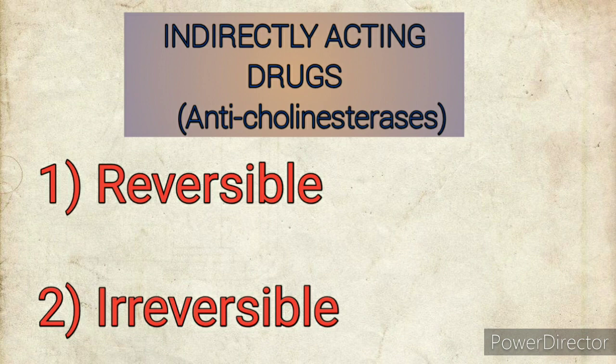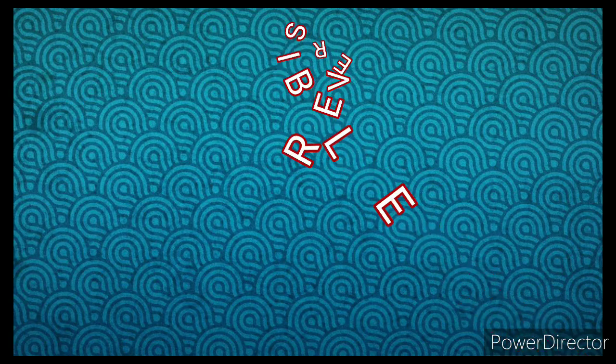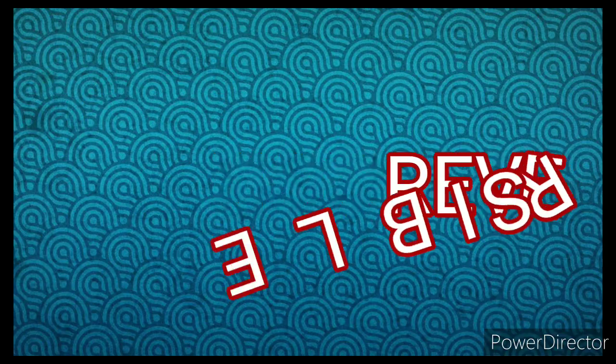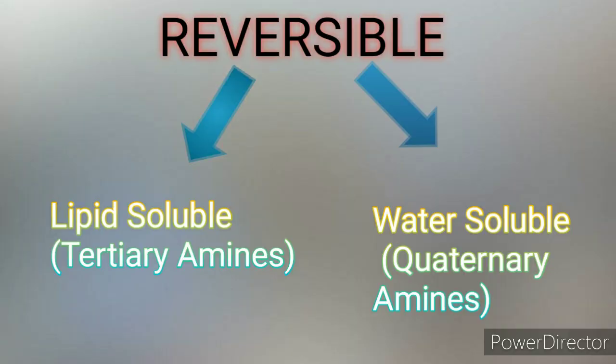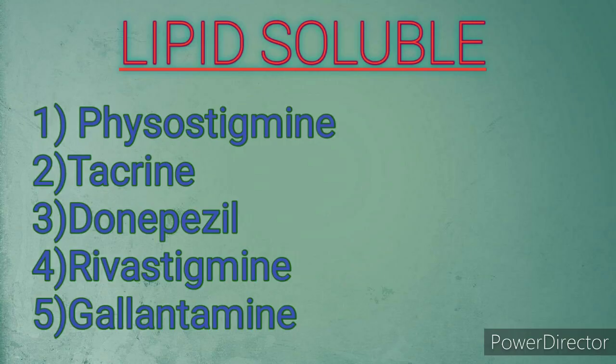Firstly we will see reversible inhibitors. Reversible inhibitors are classified into two groups. The first one is lipid-soluble or tertiary amines — these drugs are non-ionic and have no charge. The second one is water-soluble or quaternary amines — these drugs are ionic and have a charge like NH4+.